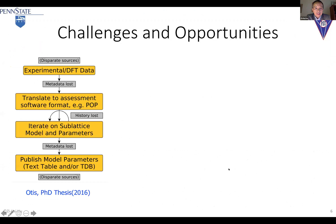This diagram is from Richard's thesis — he finished in 2016, four years already. Richard really picked up a very important point in CALPHAD modeling: when we collect the data and do the modeling, all the metadata is lost. That's a huge amount of knowledge. We have this iteration in modeling, but as soon as we finish, we lose the history. When the data is compiled into a database, we lose the metadata again — we only get a TDB file. You have disparate source data at the beginning, and at the end, disparate data points and function parameters. All the knowledge in the middle is lost.